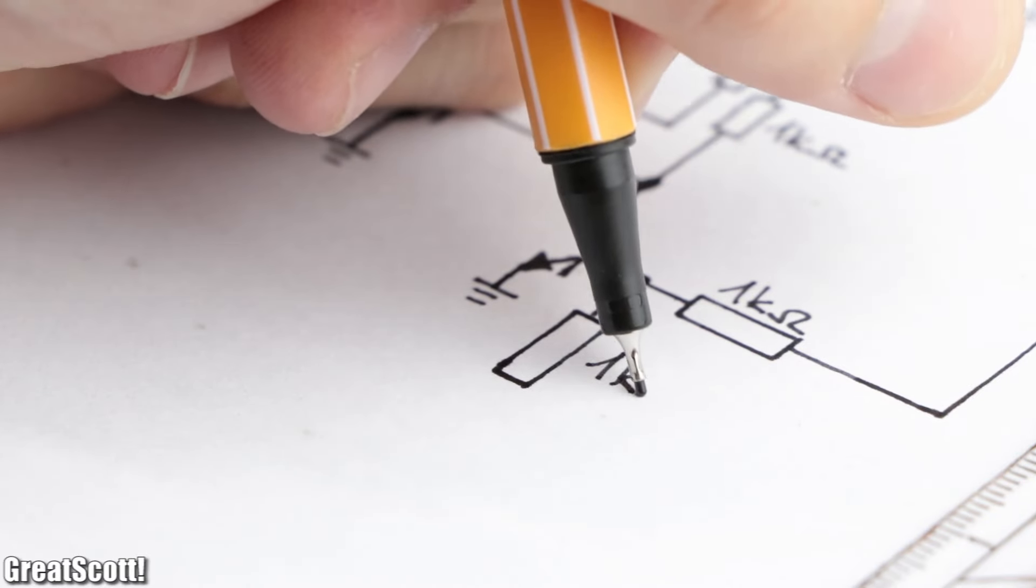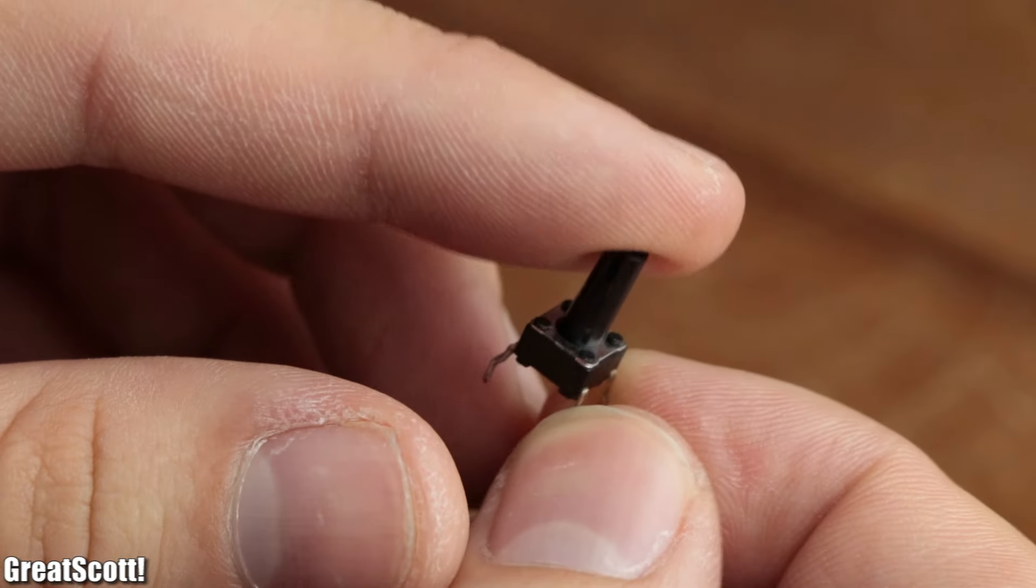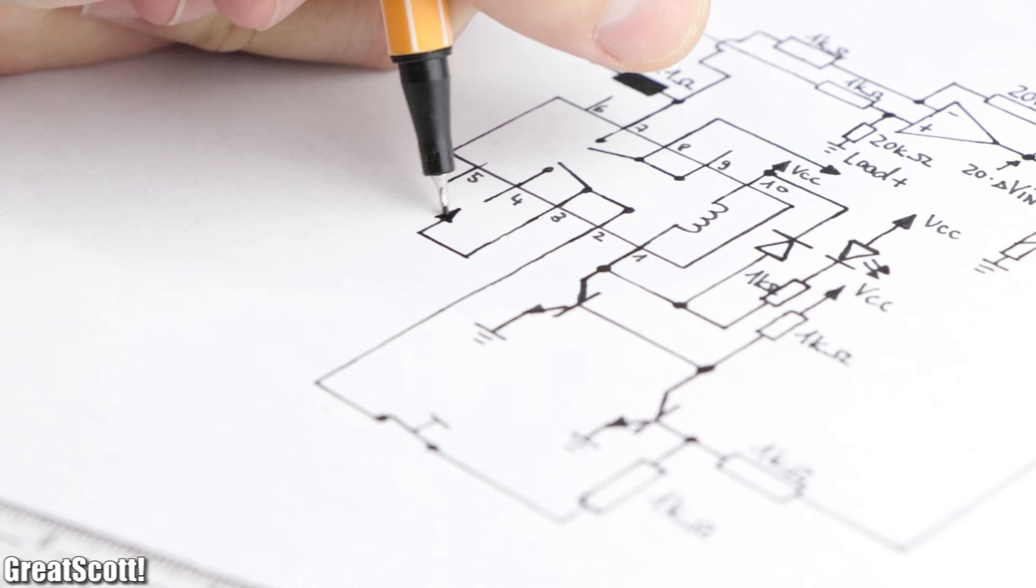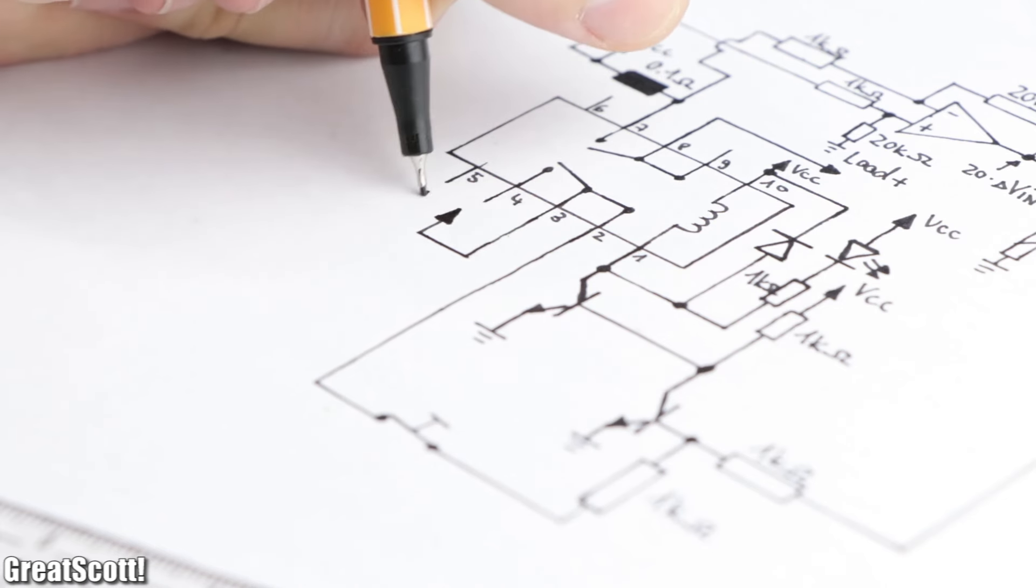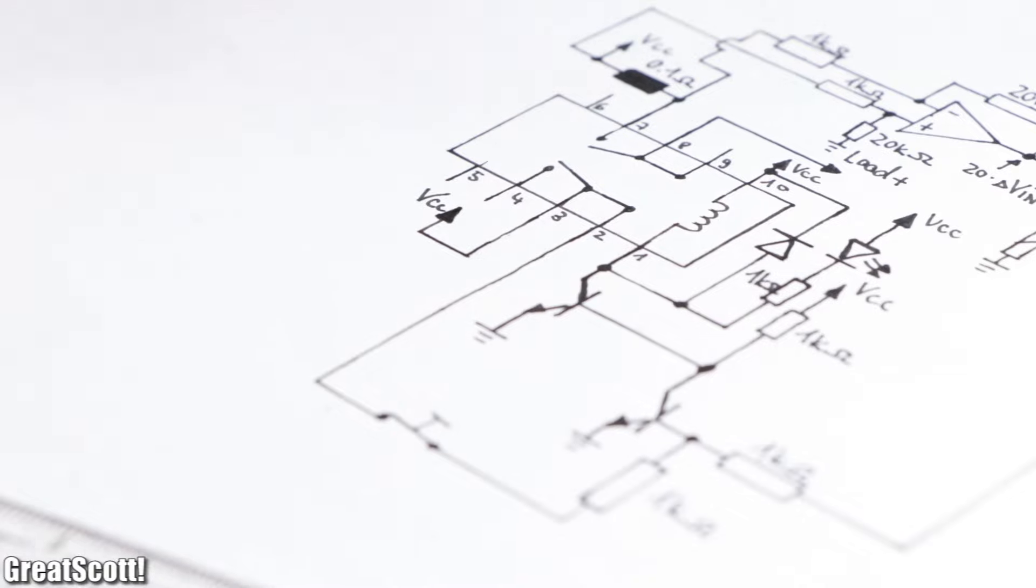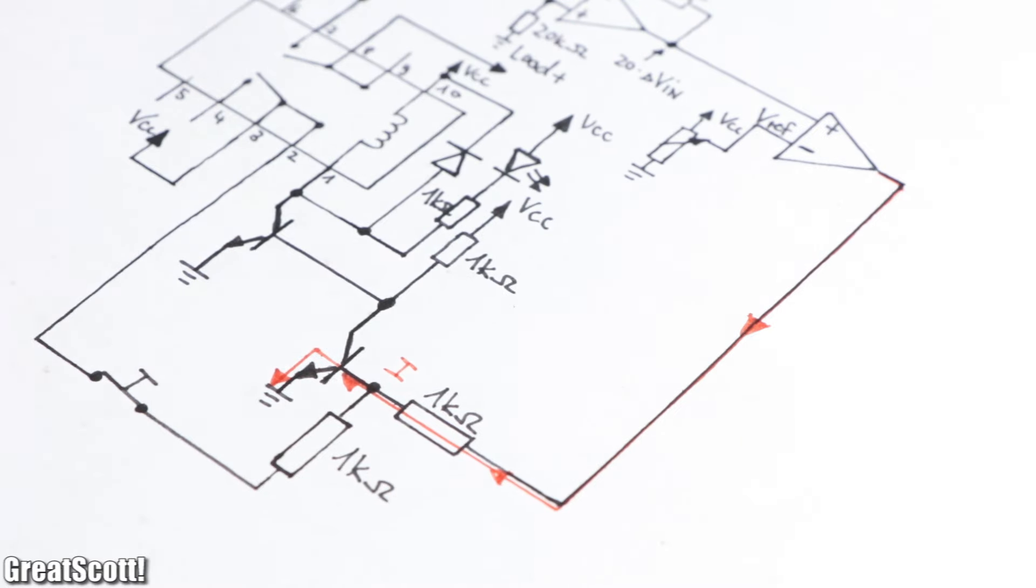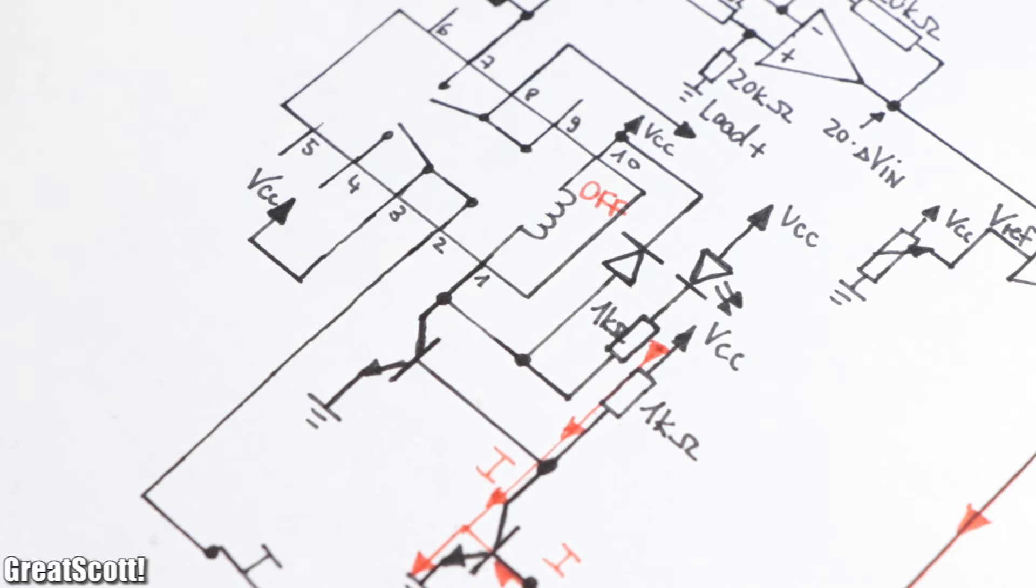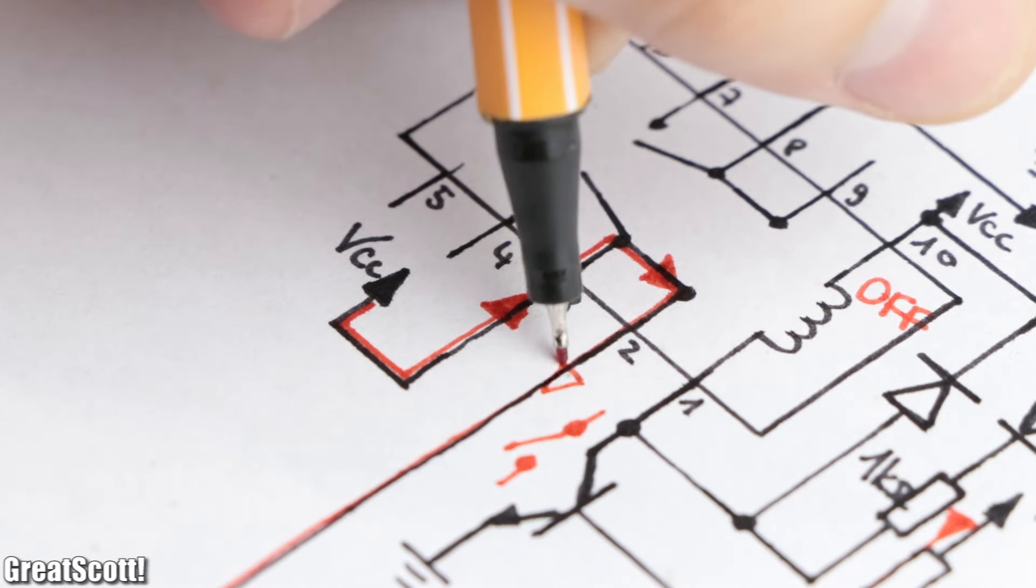So to fix this we could connect a resistor, a normally closed push button, and the other still unused normally closed contact of the relay in series to the base of the second transistor.